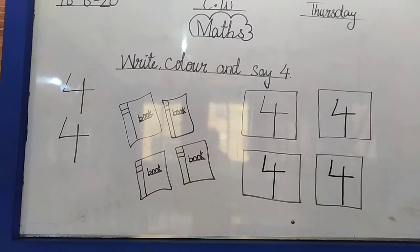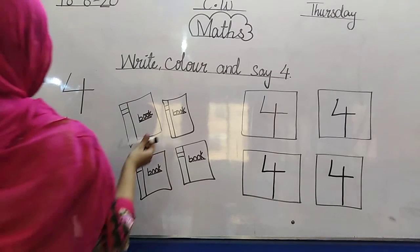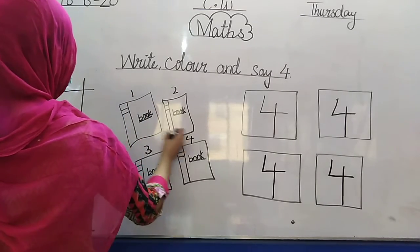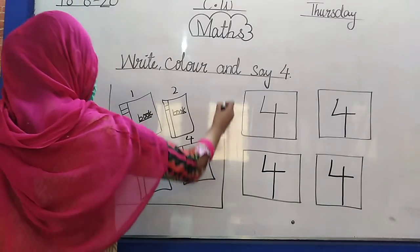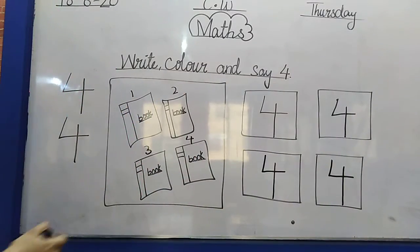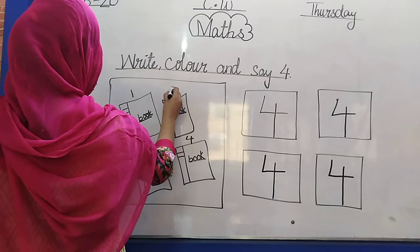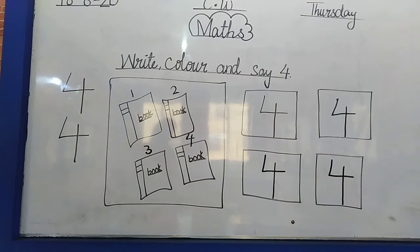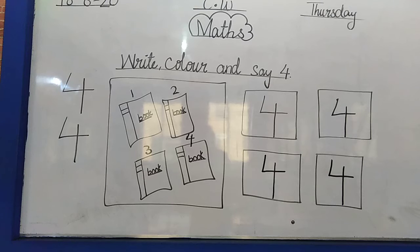Today we are writing number 4. How many books are there? There are 4 books. Come with me: 1, 2, 3, 4. There are 4 books. Everyone write number 4.